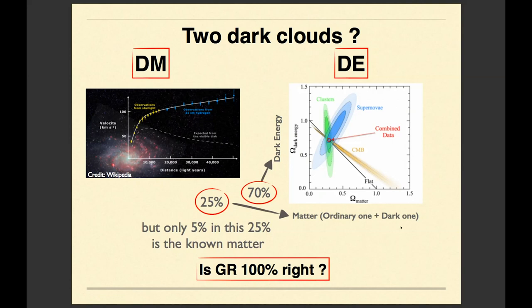Which means that if general relativity is absolutely right and correct everywhere, we live in the universe which is full of matter and energy we know nothing about.